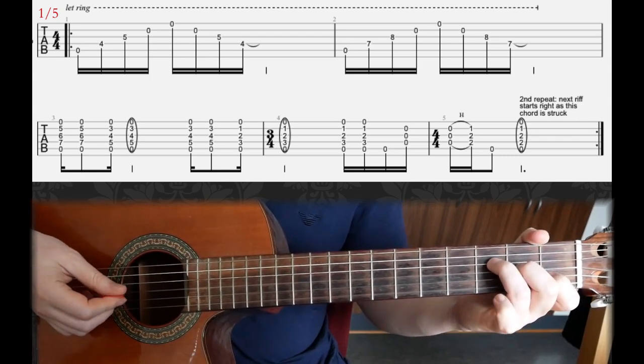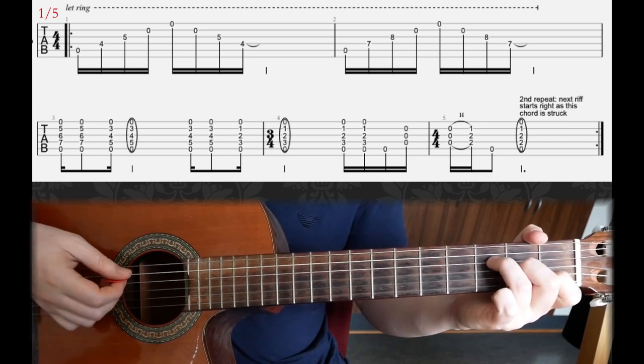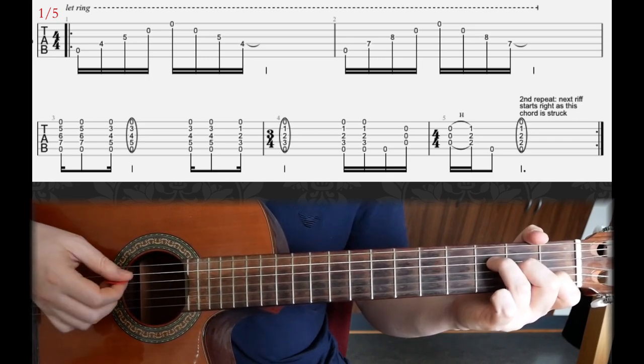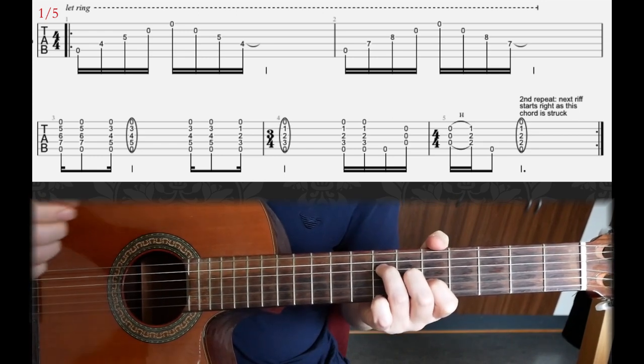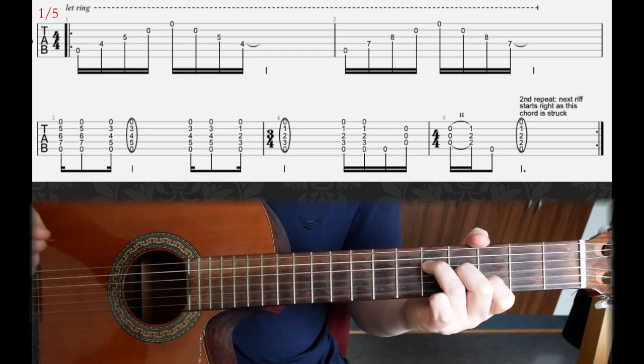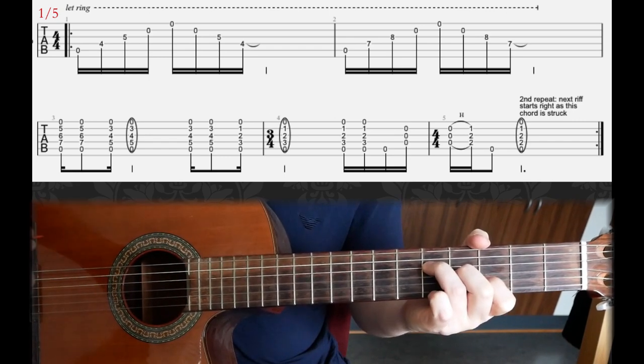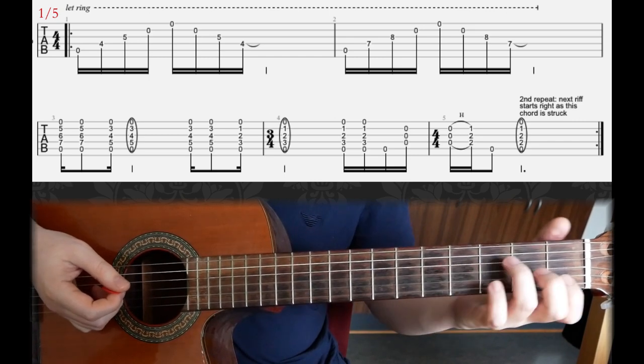And then you're going to move the shape down another 2 frets here to the F shape, okay? F major 7 shape. And the rhythm here is a bit tricky, but it goes like this. So that's the first move. And then the second move is the same, but you're going to go from here to here.